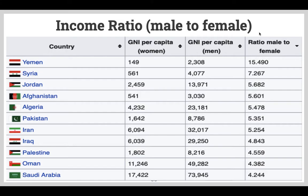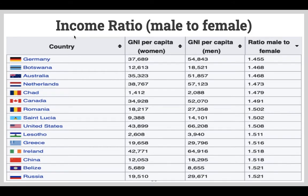That's just one way to look at gender equality within a country and within an economy. Another way is gross national income per capita, per person, for both men and women. In Yemen, for example, men make on average over 15 times as much as women. So clearly there are some gender equality issues, not just in Yemen, but in Southwest Asia, Central Asia, and North Africa. At the other end of this metric is Germany, which has the smallest gap in terms of the ratio between gross national income per capita for men and women.